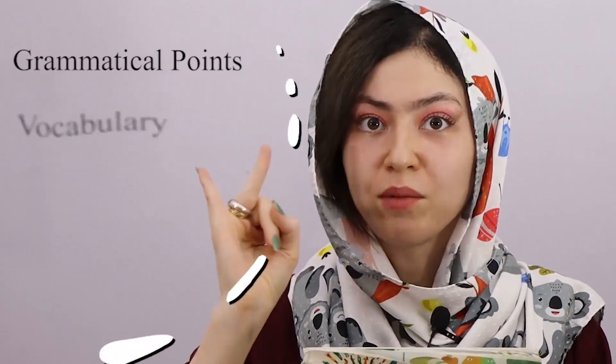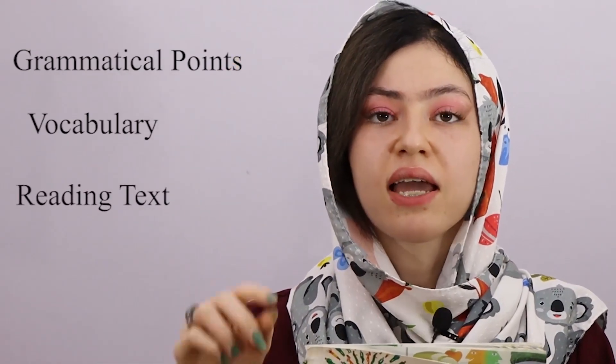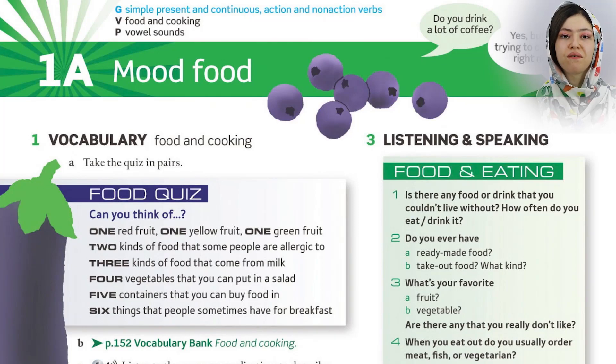American English File has different levels from starter to the advanced. In this series, we are going to work on the upper intermediate level. So if you watch our videos, you are going to reach upper intermediate level. In this book, you can find good grammatical points, useful vocabulary, and you can also find some reading texts.